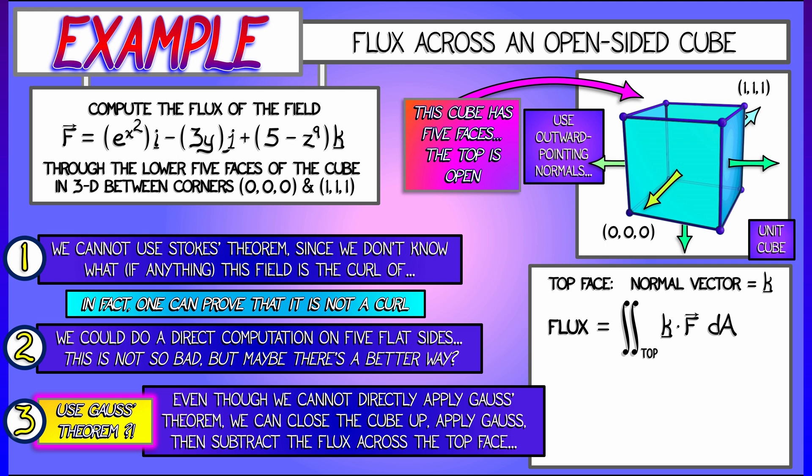We're using outward-pointing normals, and the flux out of the top is the double integral over that top face of the vector field f dotted with K. Now, the K component of that vector field is five minus z to the ninth, but across that top face, z is a constant. It's equal to one. That means I'm integrating four with respect to area. That's four times the area. It's a unit square, so the flux out of the top is equal to four.